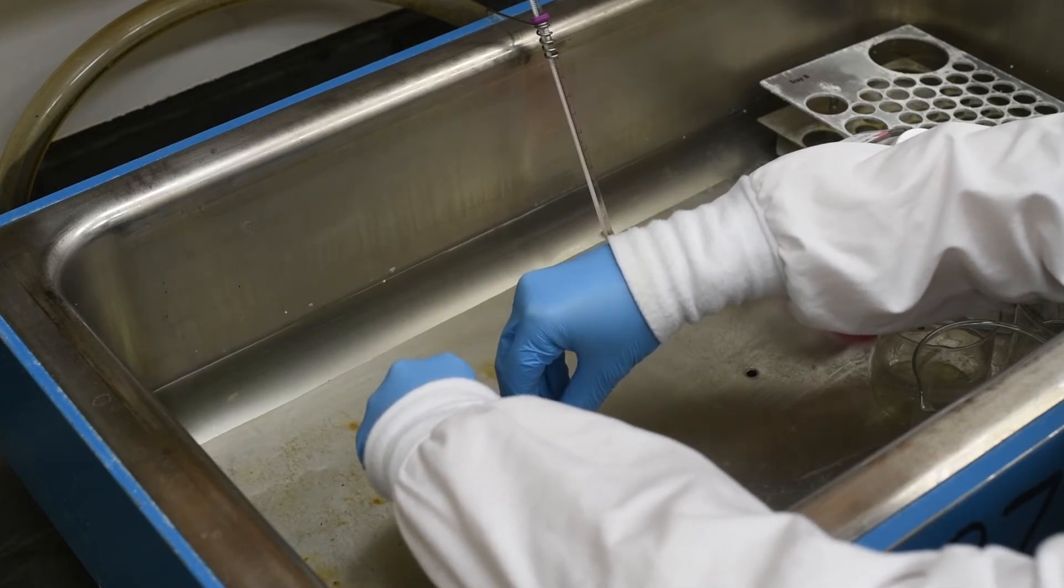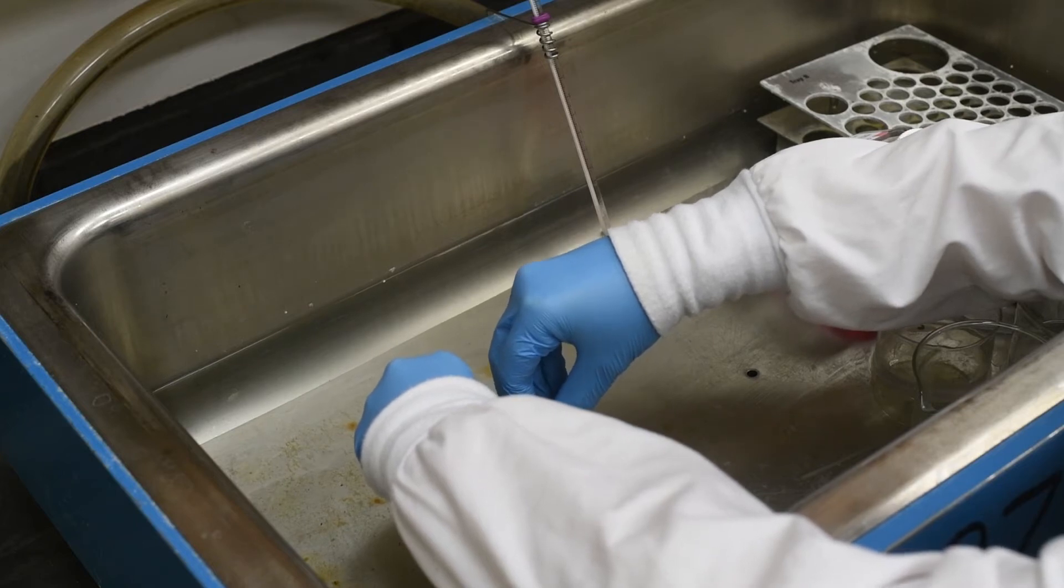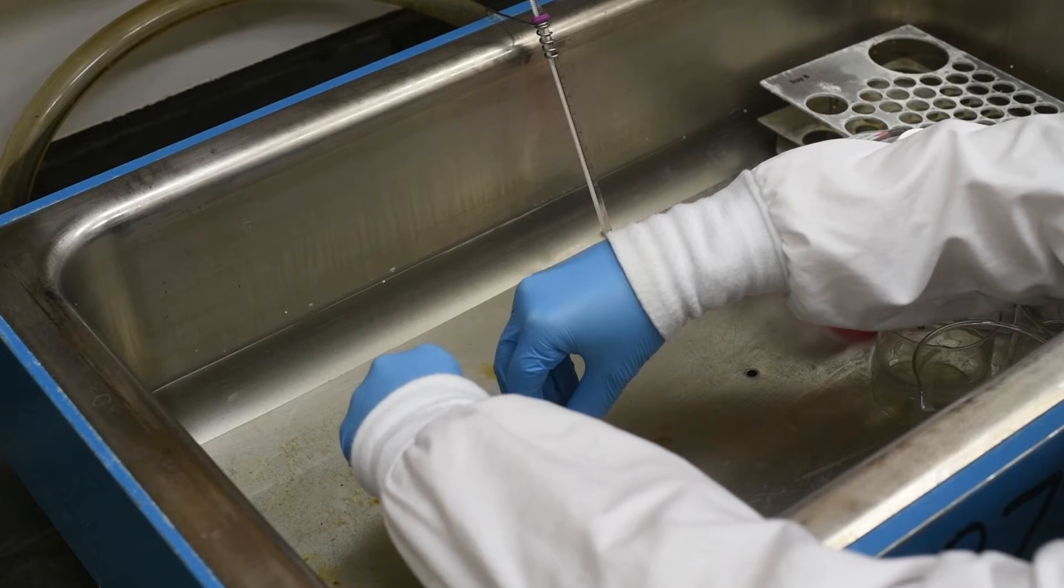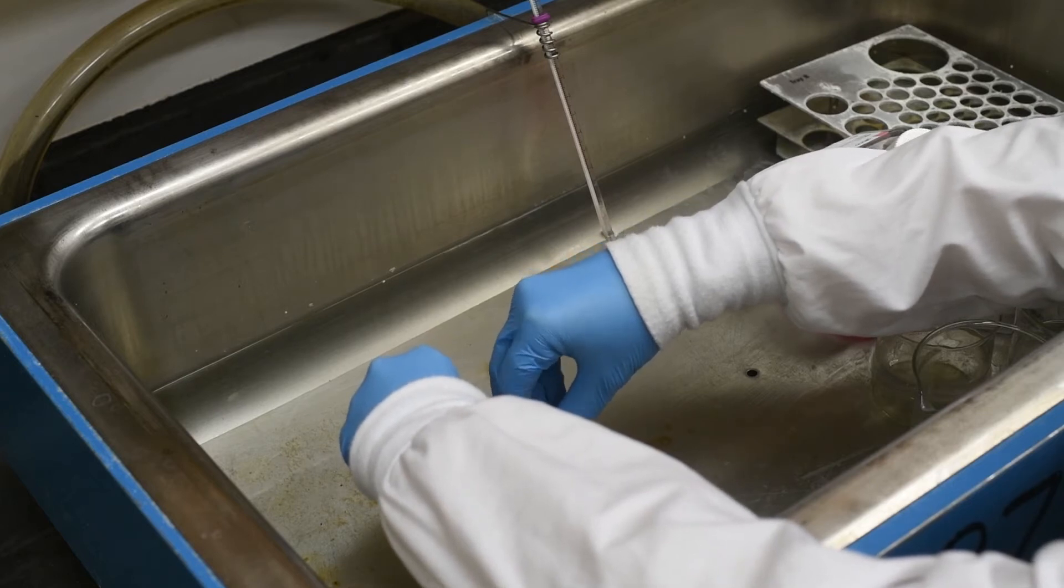As soon as your cells are removed from the liquid nitrogen, immediately place them in the 37 degrees Celsius water bath. Make sure not to submerge the cap while shaking the tube back and forth.